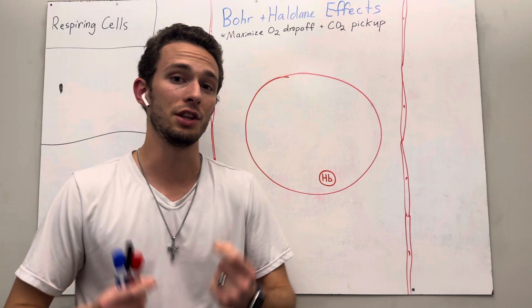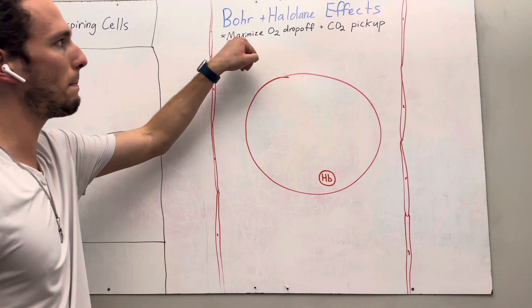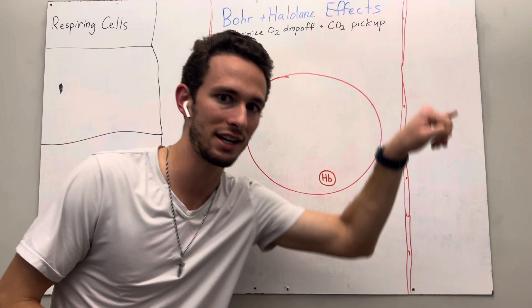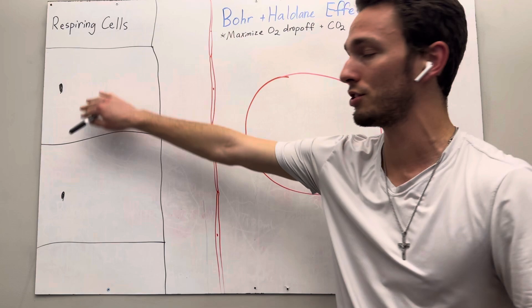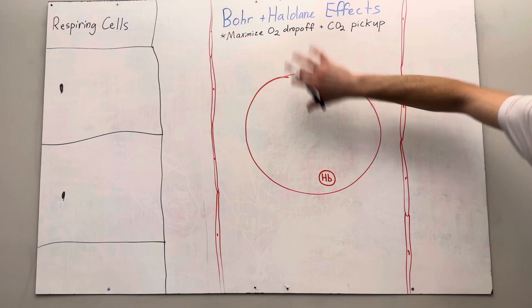So what I want you to remember first off is the goal of these effects is to maximize oxygen drop-off at the tissues and to maximize the carbon dioxide pickup at the tissues. So basically what's happening here is I've got these respiring cells, so the cells that are using oxygen and glucose making energy, and then I've got the capillary.